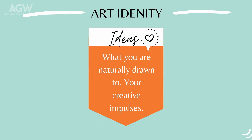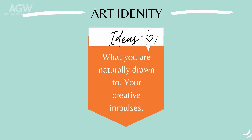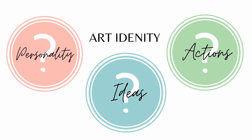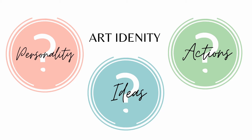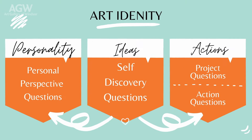For today we're going to explore the last part of our art identity: our ideas. Our ideas are what we are naturally drawn to — our creative impulses. Each part of our art identity is surrounded by unique questions. Personality has personal perspective questions, action has project-based questions and action questions (our ABCs), and lastly our ideas have self-discovery questions.